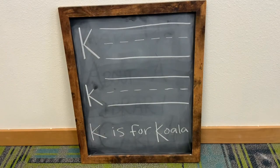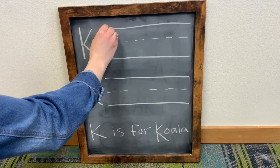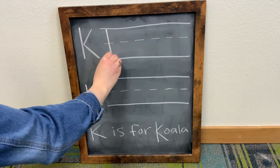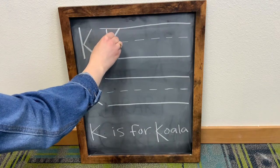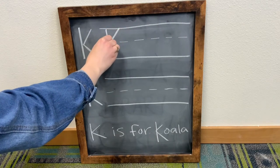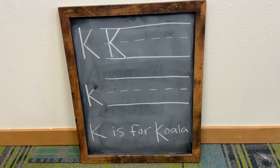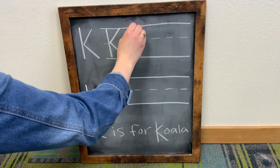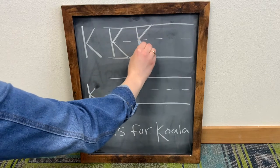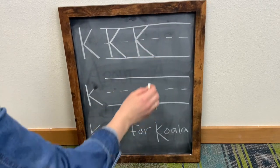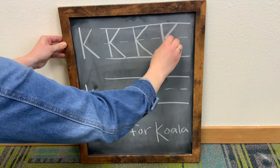Here we go! For an uppercase letter K, first we are going to draw this vertical line. Second, we are going to draw this line, sort of at an angle. And third, we're gonna come down, touch the bottom. One, two, three. One, two, three.